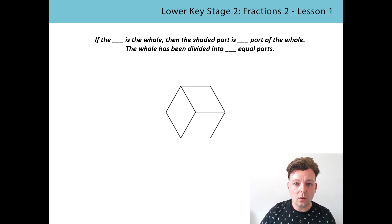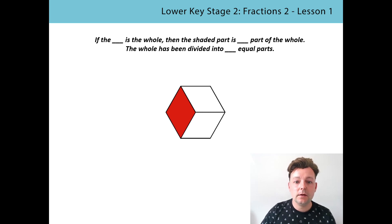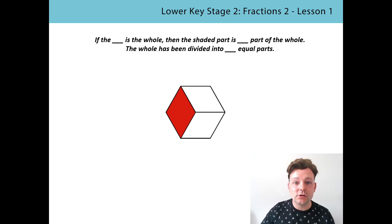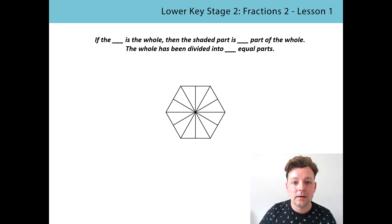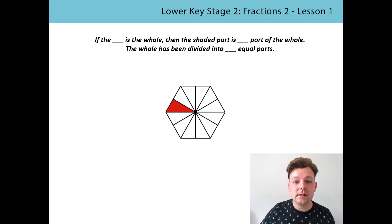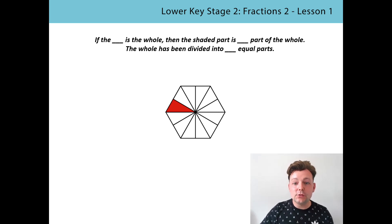For this one, have you noticed how the whole is the same but the number of equal parts is different? Let's try and read the stem sentence together: If the hexagon is the whole, then the shaded part is one part of the whole. The whole has been divided into three equal parts. For the next shape, pause the video and have a go at reading the stem sentence yourself, then replay to check. If the hexagon is the whole, then the shaded part is one part of the whole. The whole has been divided into 12 equal parts.